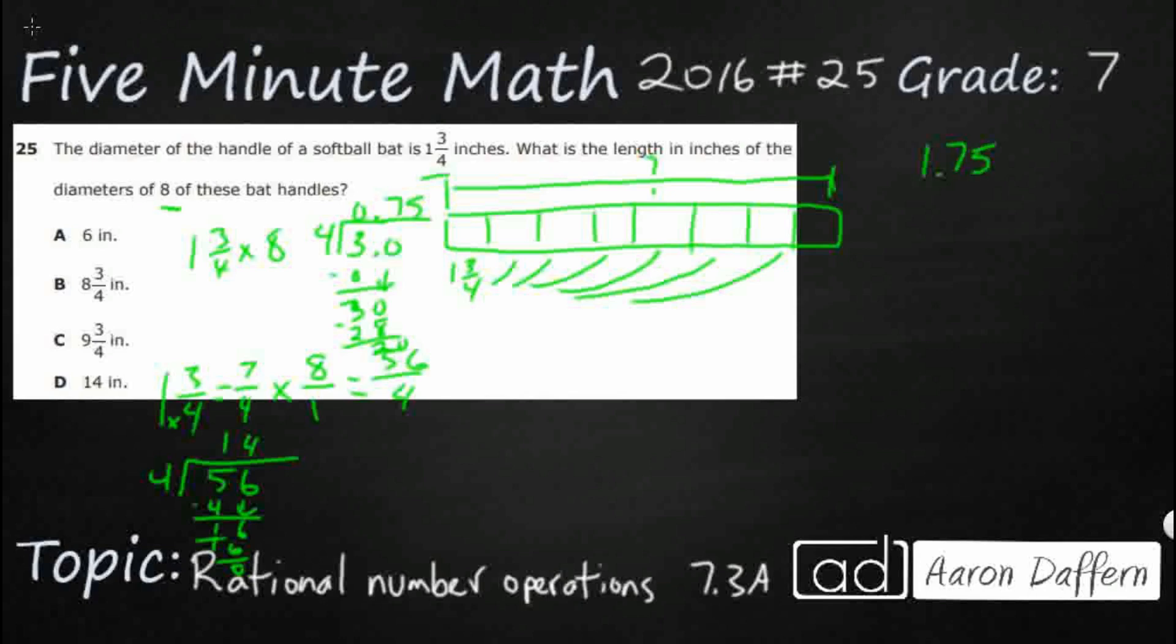If we multiply that 1.75 times 8, we could get our answer. That is going to be 40. That is going to be 56, and add that 4, that's going to be 60. And 8 times 1 is 8, add that 6 is 14.